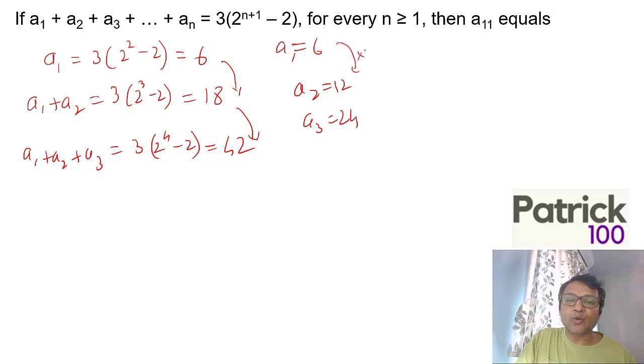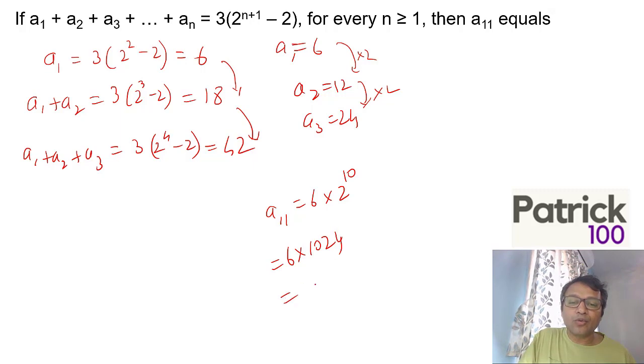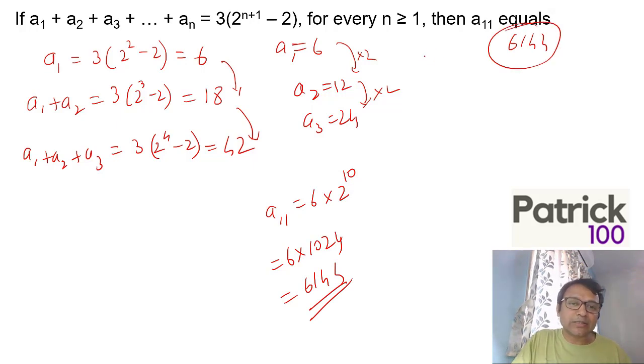You can see it doubles every time - ×2, ×2. So A₁₁ will be 6×2¹⁰ = 6×1024 = 6144. You need to find the pattern. Just put n=1, get A₁=6; put n=2, get A₂=12; put n=3, get A₃=24. You can see it doubles every time. So when you go to A₁₁ it will be 6 first value ×2 multiplied 10 times = 6144.